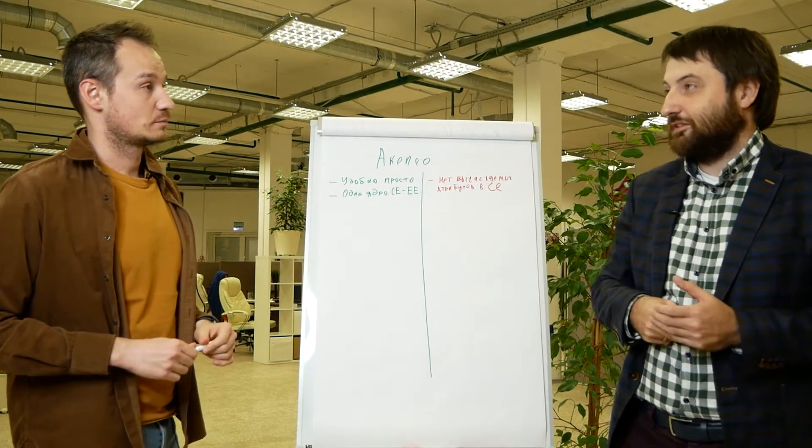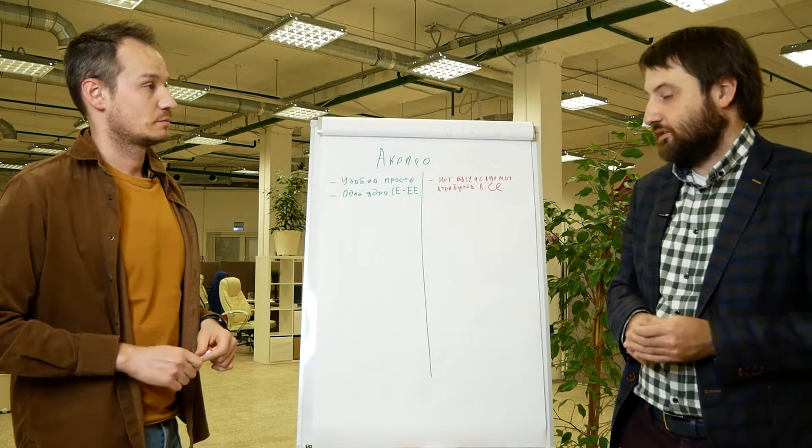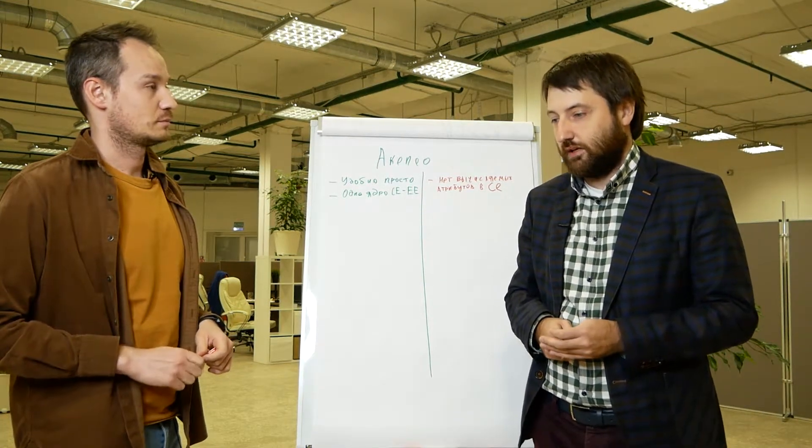Everything you have in the Enterprise solution is also available in the Community one. But you might be missing some things, such as versioning. We will come to it later. There is one core. And the only thing that is different in the Enterprise from the Community is the set of modules. Alright, let's shuffle all the pros and cons, one by one. What are the other advantages of Akeneo?